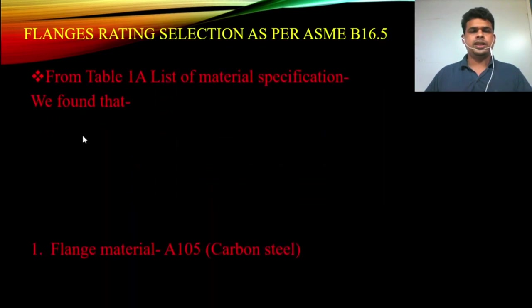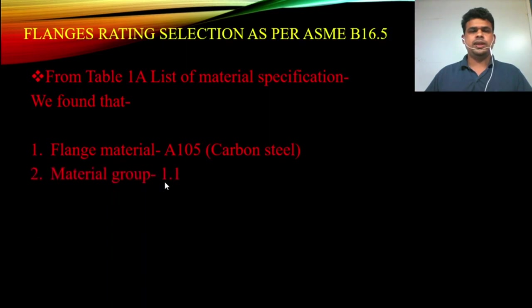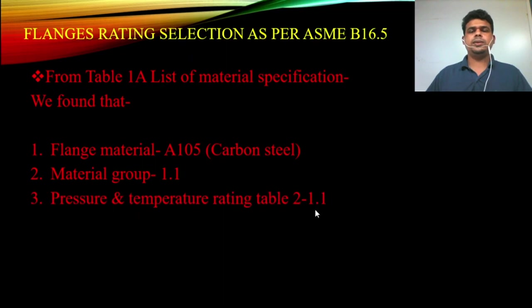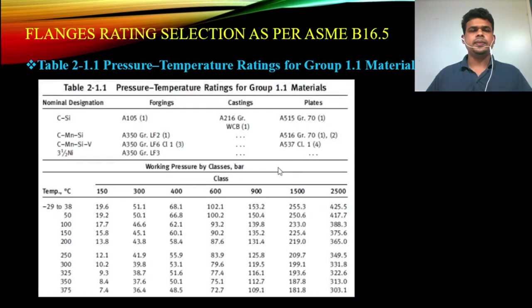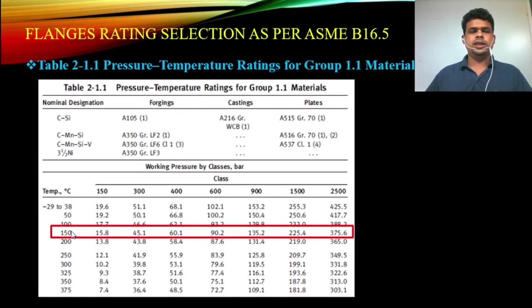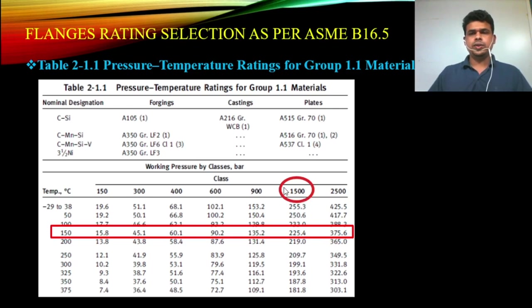From Table 1A we find flange material A105 belongs to material group 1.1, and the pressure-temperature rating table is 2-1.1. Looking at Table 2-1.1 for group 1.1 material: our design temperature is 120 degrees Celsius and our design pressure is 150 bar. At that temperature, class 1500 gives 225.4 bar, which is more than 150 bar, whereas class 900 gives only 135.2 bar — which is not enough. Therefore, for this condition we need to use a 1500-pound flange.